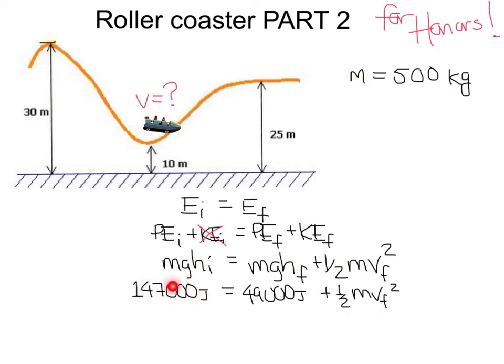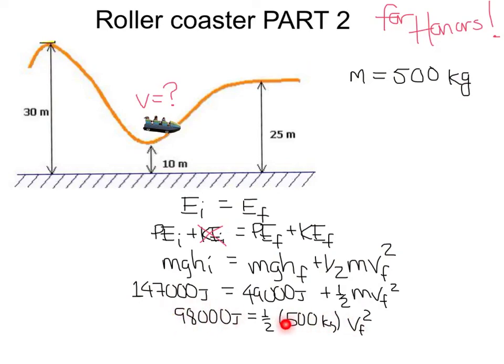The PE at the top is 147,000 joules and at the bottom it's 49,000 joules. The difference — 98,000 joules — equals the kinetic energy at the bottom. Solving this for the velocity of the roller coaster, the final velocity is 19.8 meters per second. Thank you for watching and see you in class.